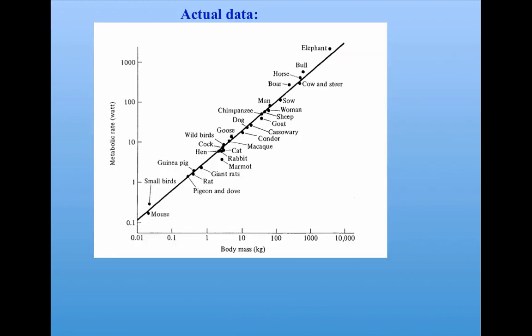So here's some data, and this is a log log plot, where body mass is plotted here, and metabolic rate is plotted here, and you can see these different organisms fall pretty well on a straight line. And if you measure the slope of this line, it is not two thirds, but rather it is three fourths. Unexpectedly, while the geometric argument would argue for this exponent being two thirds, the actual data shows that it's three fourths.